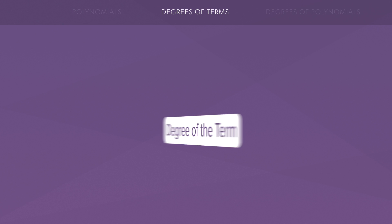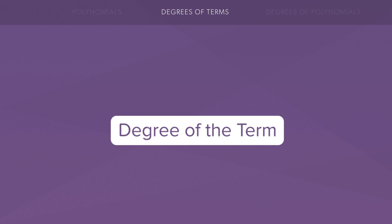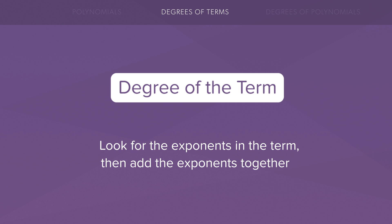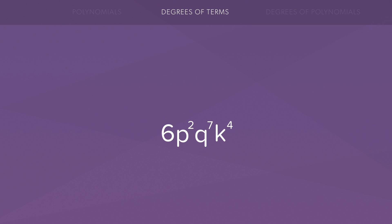When you're trying to find the degree of a term, all you have to do is look for the exponents and then just add the exponents together. So in this situation we have exponents of 2, 7, and 4. And so to find the degree of this term all we would have to do is add the exponents and we would get 13.